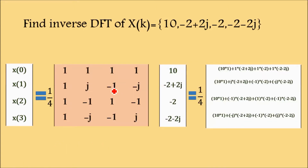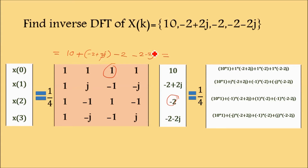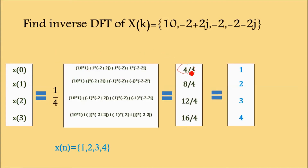For the first value x[0]: 1×10 + 1×(-2+2j) + 1×(-2) + 1×(-2-2j). The imaginary parts +2j and -2j cancel. Real part: 10 - 2 - 2 - 2 = 4. Dividing by 4 gives x[0]=1. Similarly, computing the other values gives 8/4=2, and so on, yielding x[n]={1,2,3,4}, which verifies the inverse DFT. Remember the matrix carefully.